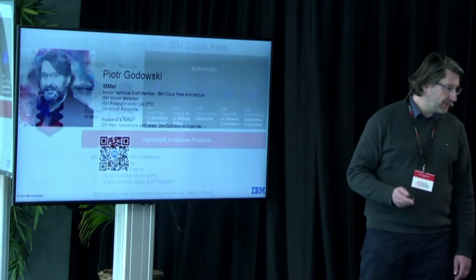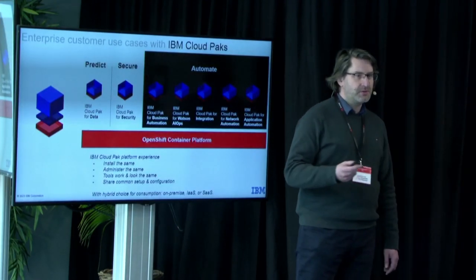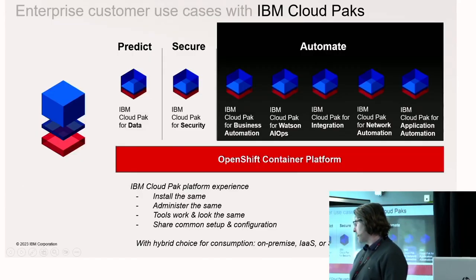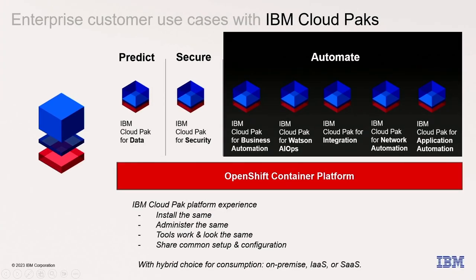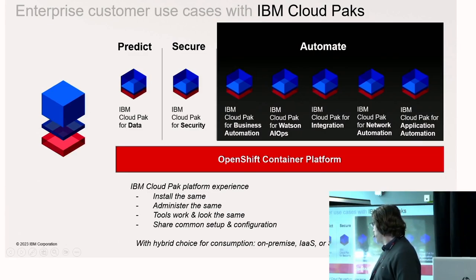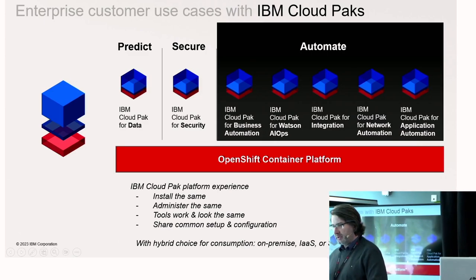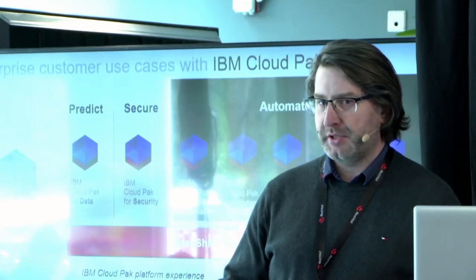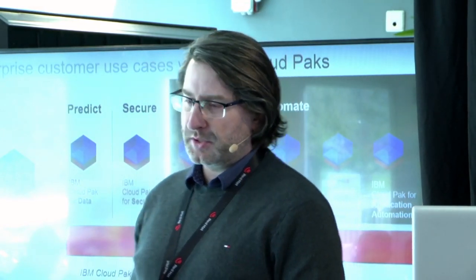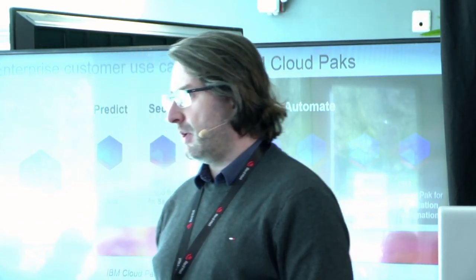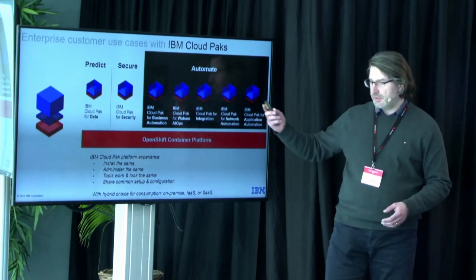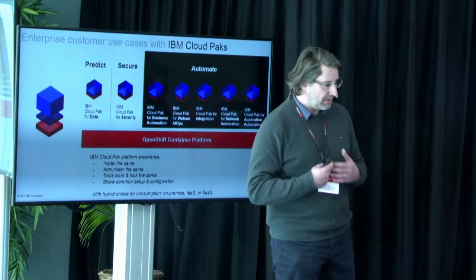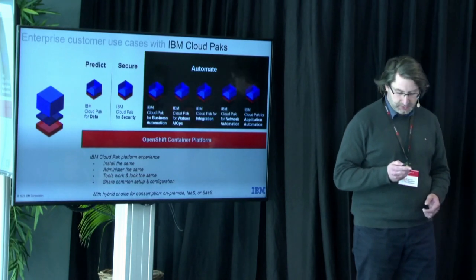I'll start with introducing the enterprise customer use cases of Cloud Packs. Cloud Packs are IBM products running on Kubernetes, specifically on OpenShift. There are seven of them, and they are specifically developed and curated to be first-class citizens on the OpenShift platform. They are grouped together as a collection of capabilities for some logical domain — whether you're interested in data analytics, machine learning, securing your infrastructure, automating business processes, or integrating different environments. What they have in common is that they run on OpenShift Container Platform, are 100% containerized, and use heavily the OpenShift Operator Lifecycle Manager.